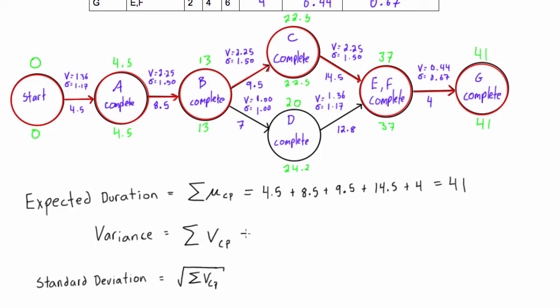Same thing goes for the variance. We want to sum up the variance for each activity along the critical path. So we have 1.36 plus 2.25 plus 2.25 plus 2.25 plus 0.44, and that gives us the value of 8.55 for the variance of the entire project.